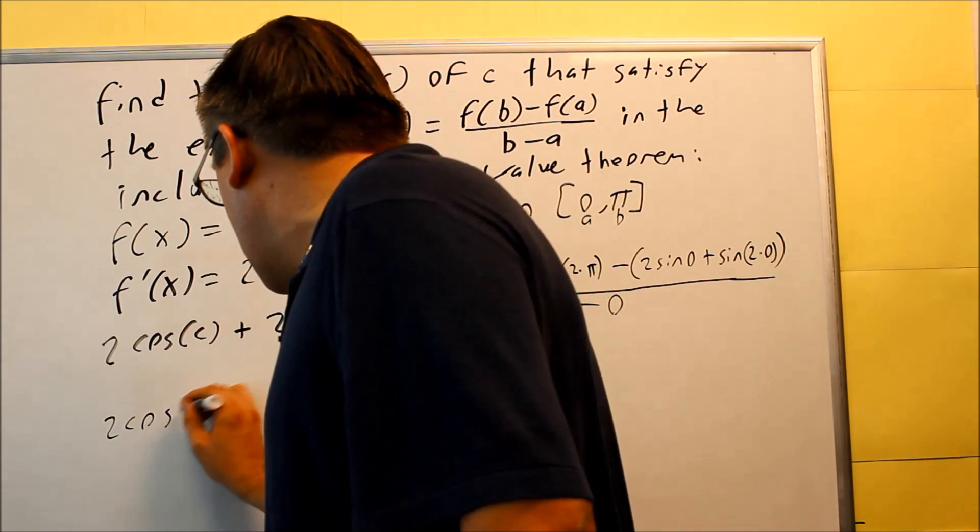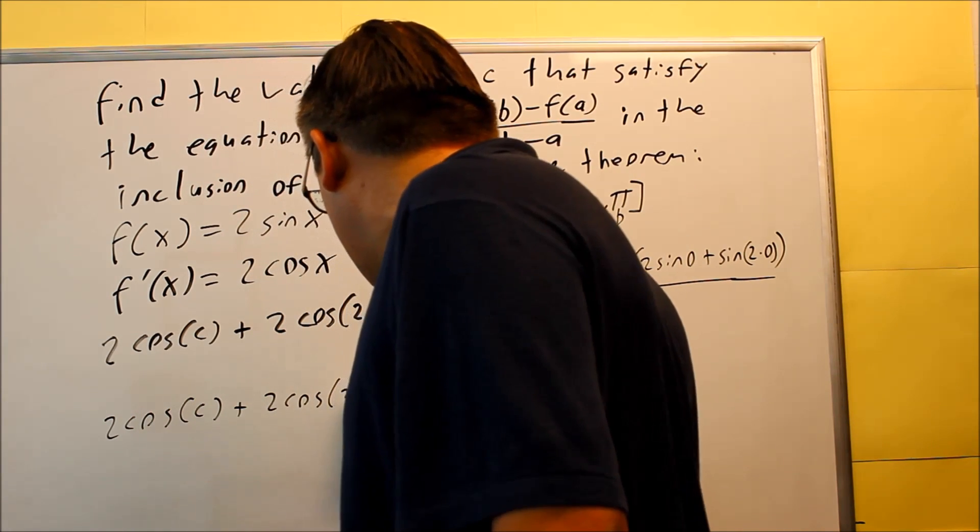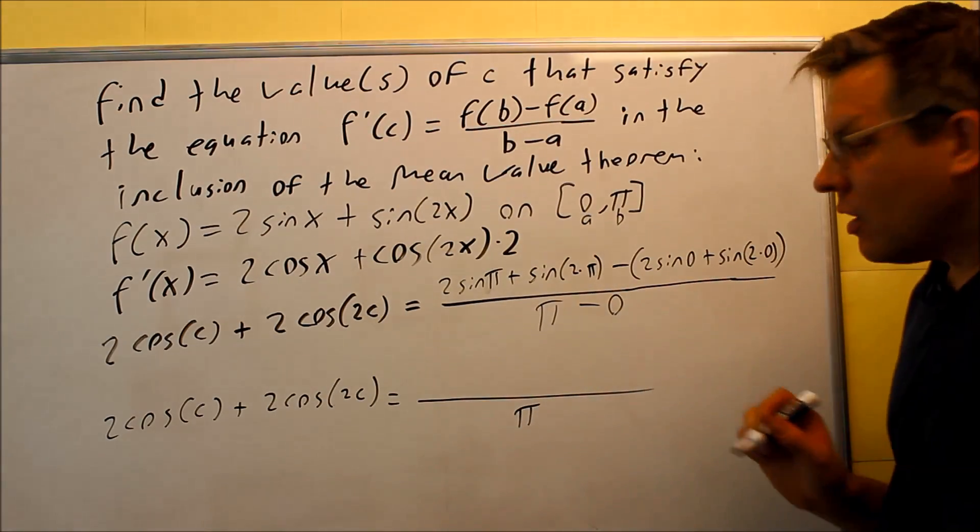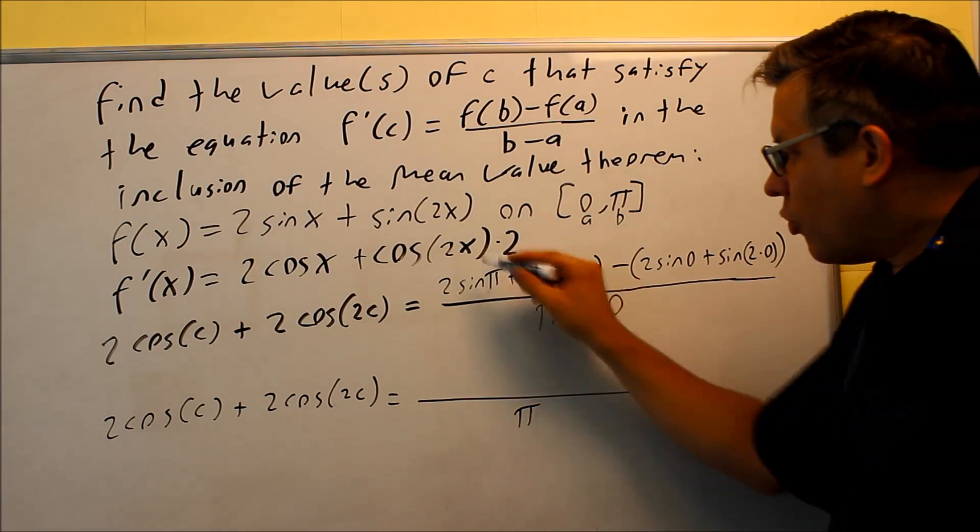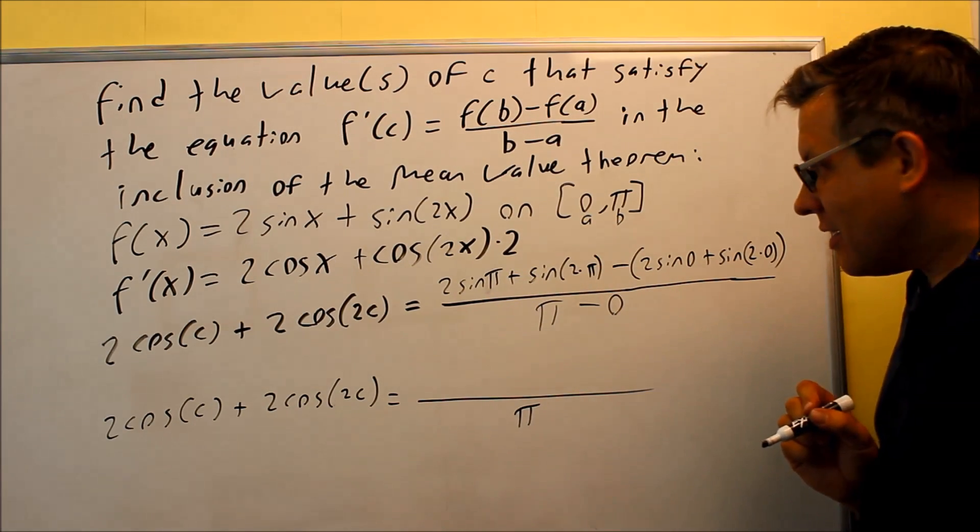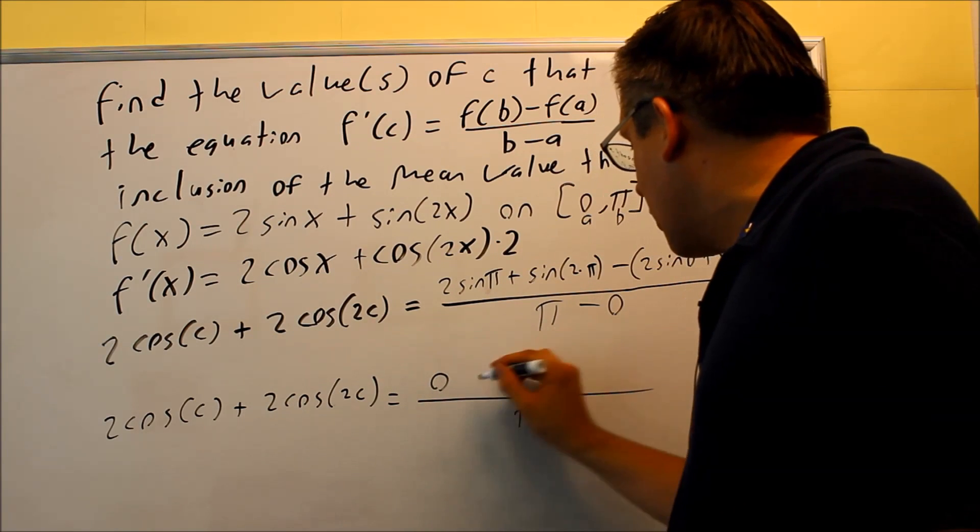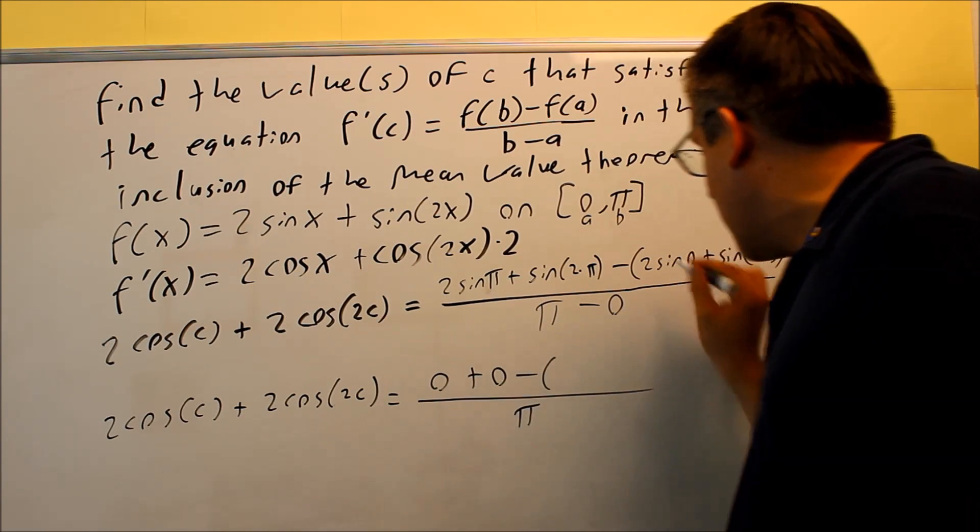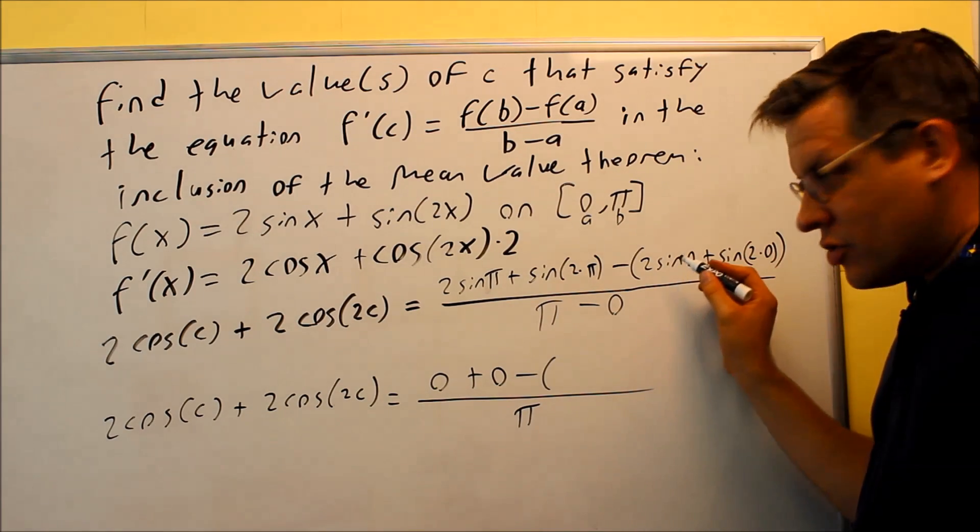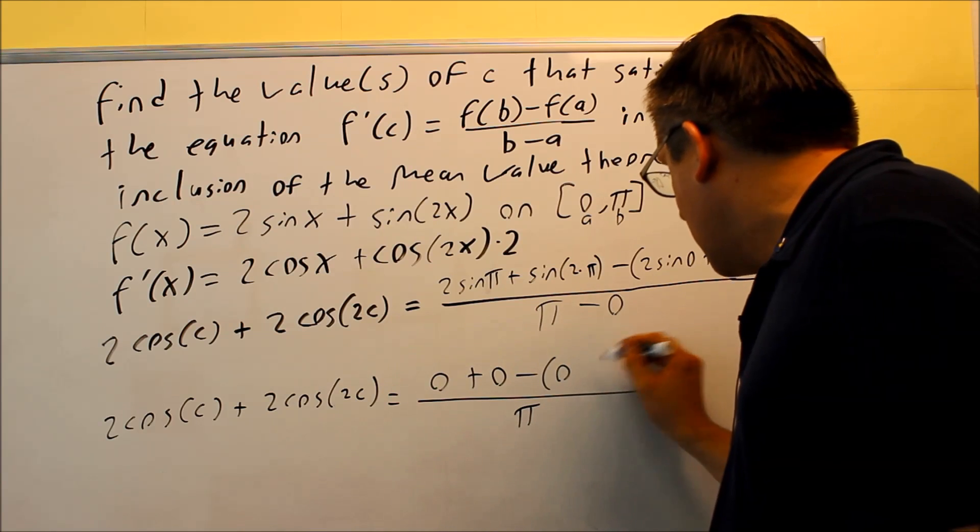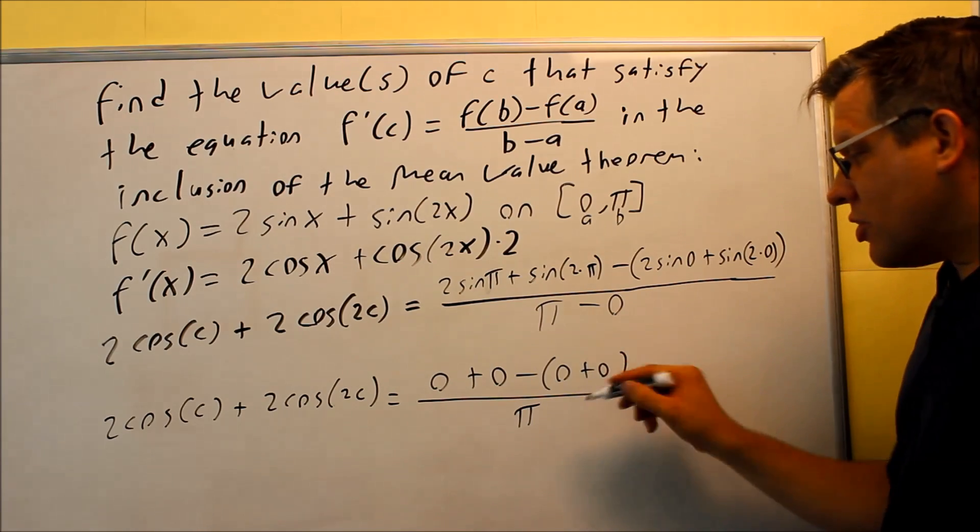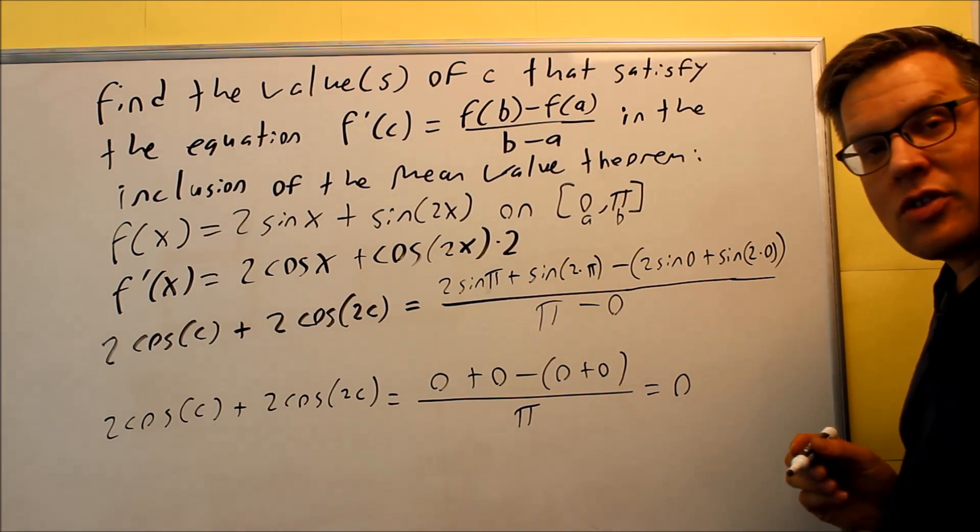We have 2cos(c) + 2cos(2c). On the bottom we're going to have π. On top, we're going to evaluate this. We've got to use our unit circles on this. Sin(π) is going to be 0, so I get 0 for this plus 0. And inside here, sin(0) is also 0, so actually I get 0 + 0 on the inside there. So that means that all this is going to end up equaling 0 because I have 0 over anything.